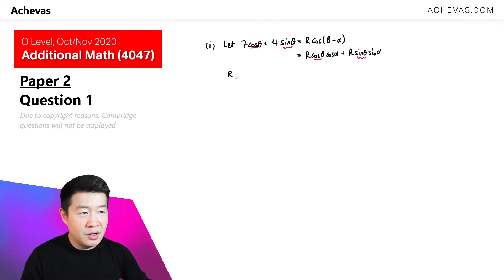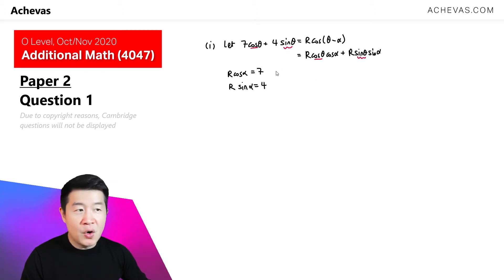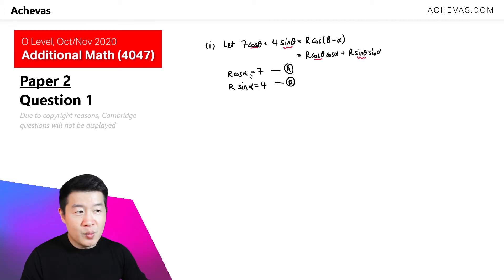Comparing coefficients, R cosα must equal 7, and R sinα must equal 4. So now we have a pair of simultaneous equations involving R and α, and we will be able to solve for both R and α by solving this pair of simultaneous equations.